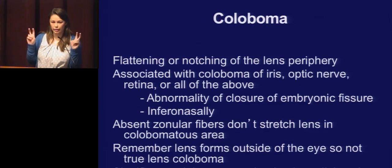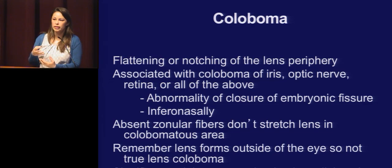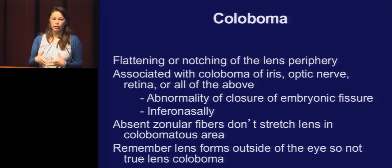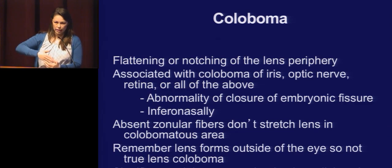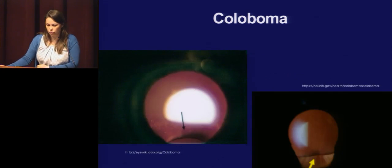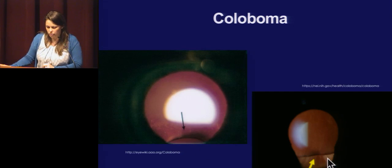Coloboma of the lens is a flattening or notching of the lens. It's usually associated with a coloboma of other structures from an abnormality in the closure of the embryonic fissure. It occurs infranasally, really because there are no zonular fibers in that area, so the lens isn't stretched equally and you see a concave area. It's not truly a coloboma of the lens because the lens forms outside the eye and then migrates in.